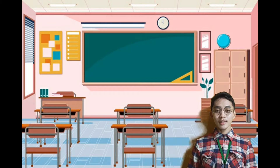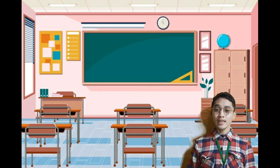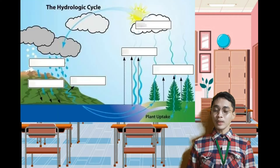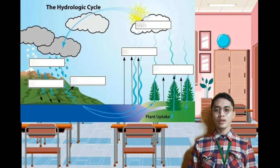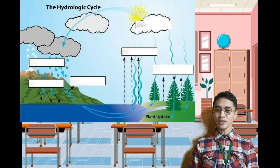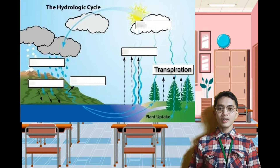Thank you for your cooperation class. Last meeting, I gave an activity. All you had to do is give the name of each part. So let's check your papers now. Number one: what produces water vapor from plants? That's correct — transpiration.